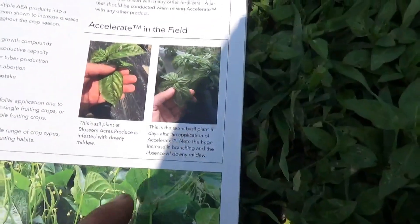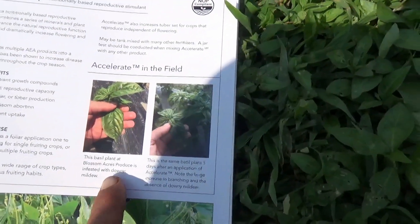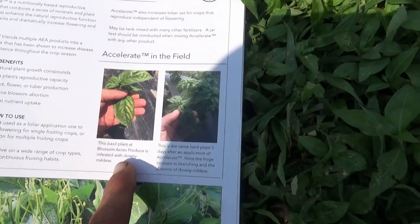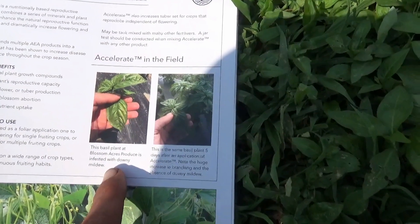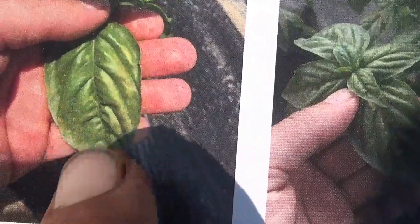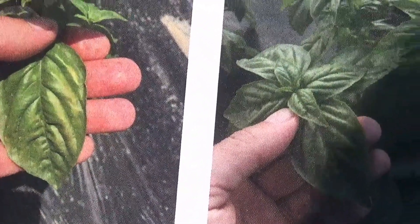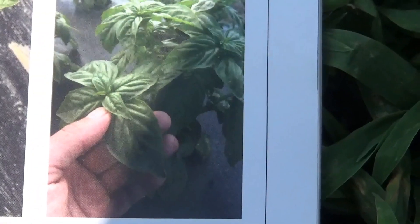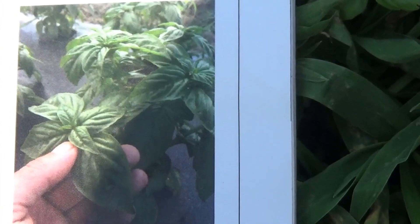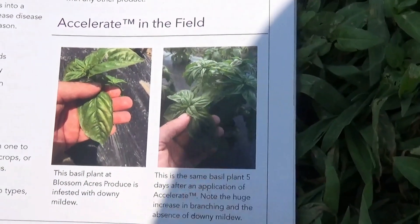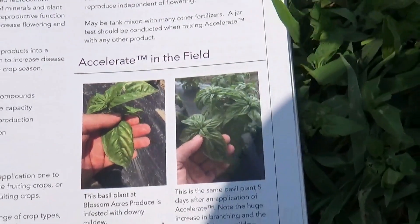Here are a couple of pictures showing two different basil plant blossoms. The first shows a basil plant blossom infested with downy mildew - you can see it clearly on the leaf. The second picture is the same plant five days after application of Accelerate. Note the huge increase in branching and the complete absence of downy mildew. That plant just exploded in response in only five days.